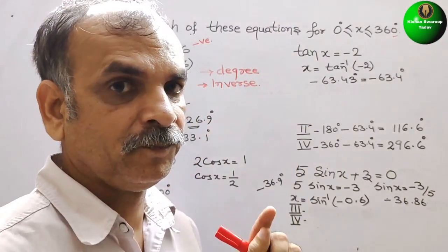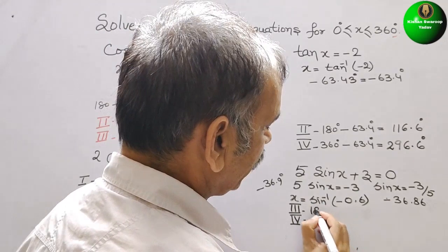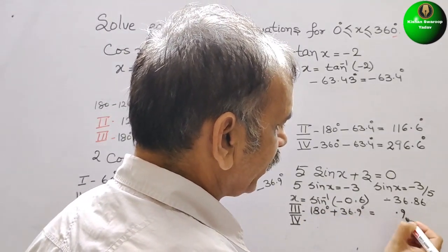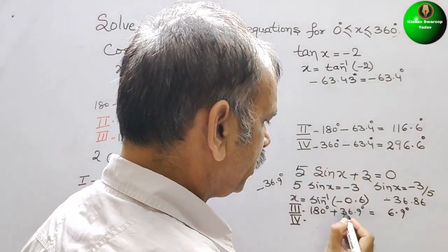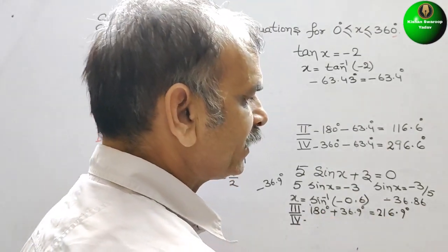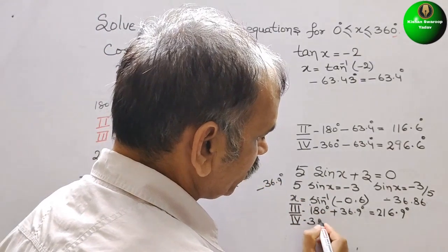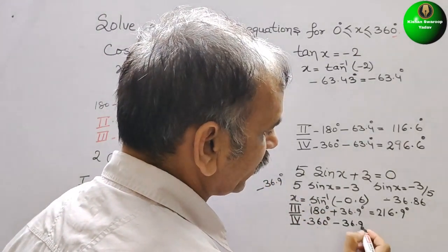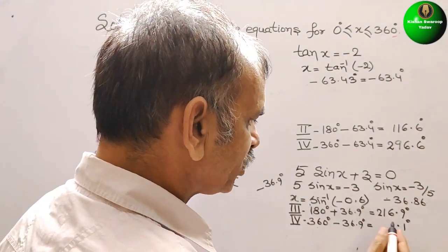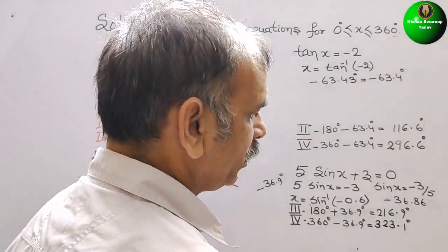For the third quadrant: 180° + 36.9° = 216.9°. For the fourth quadrant: 360° - 36.9° = 323.1°.